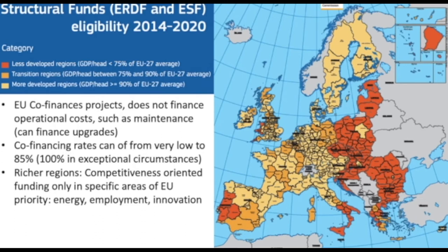The co-financing rate of the funds varies greatly between types of intervention. The highest limit for a grant to the private sector would never go over 50%, but for public infrastructure, co-financing has reached 85% in the poorest regions, and exceptionally due to the crisis, some regions are granted 100% EU finance. The co-financing rate, up to the limit allowed by regulations, is decided by the regions and member states — whether they want more projects with lower EU co-finance or fewer projects with higher EU co-finance. The key is ensuring no over-subsidization. In richer regions, funding is competitiveness-oriented and only covers specific EU priority areas such as energy, employment, or innovation.